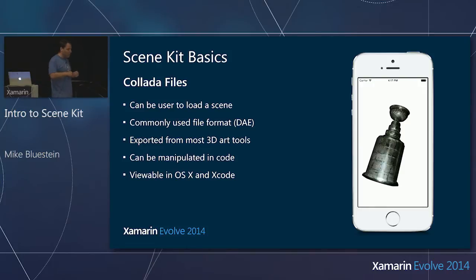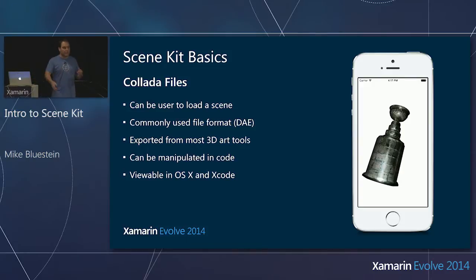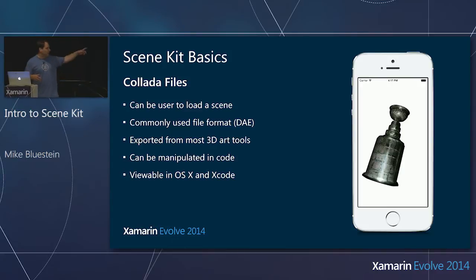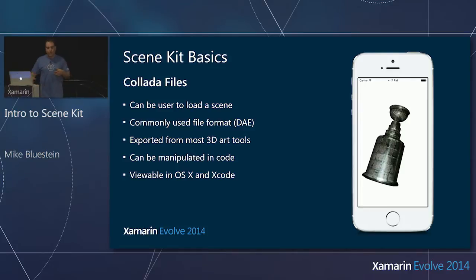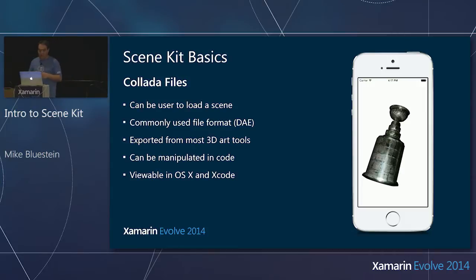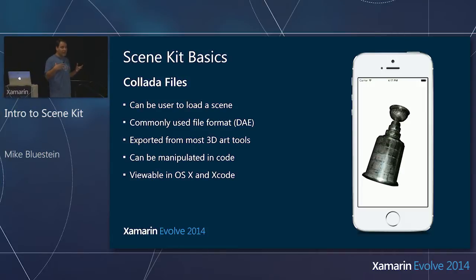SceneKit can, in one line of code, bring in a Collada file with all the animations that can be described in it, and put it right into the scene. The entire scene graph gets built up from the Collada file, including the animations.